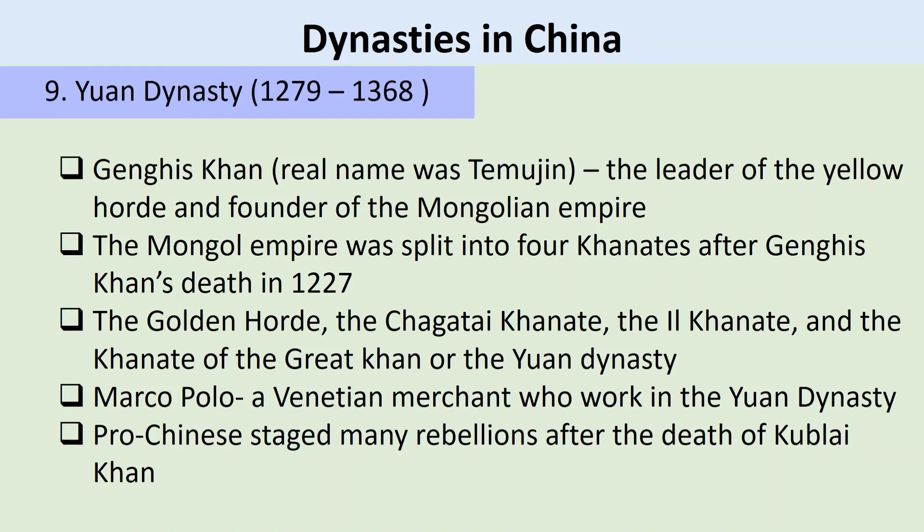Due to the vast Mongolian empire, it was split into four khanates after the death of Genghis Khan in 1227, to be ruled by his sons and grandsons: the Golden Horde in Russia and Eastern Europe, the Chagatai Khanate in Central Asia, the Ilkhanate in the Middle East, and the Khanate of the Great Khan in China and East Asia, also known as the Yuan Dynasty.